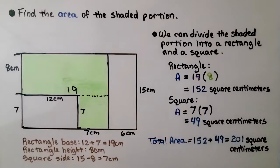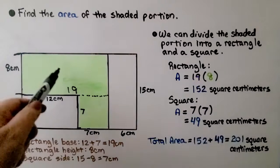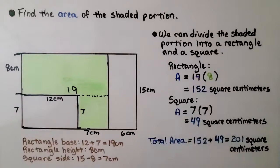That would be 49 square centimeters. The large rectangle is 152 square centimeters. We add them together to get a total area. We get 201 square centimeters.